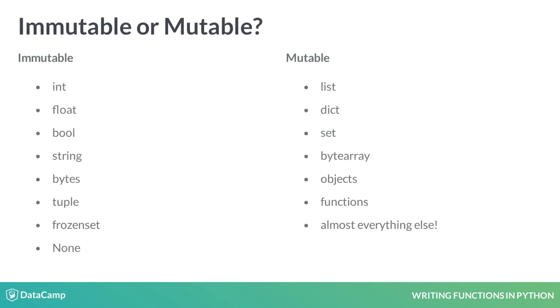There are only a few immutable data types in Python, because almost everything is represented as an object. The only way to tell if something is mutable is to see if there is a function or method that will change the object without assigning it to a new variable.